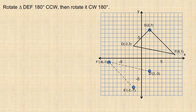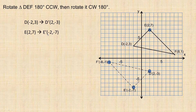We can draw in our triangle. Listing the coordinates: D was (−2, 3) and became (2, −3) — notice the x-coordinate of D was negative and is now positive, it just changed its sign. E was (2, 7) and became (−2, −7). F was (8, 1) and became (−8, −1). So again, the rule is: the point (x, y) changes into (−x, −y). The opposite sign of each coordinate is what happens in a 180 degree counterclockwise rotation.